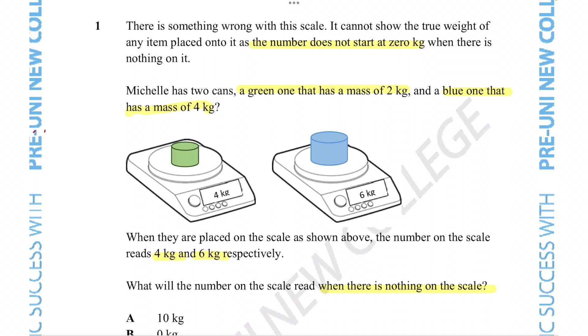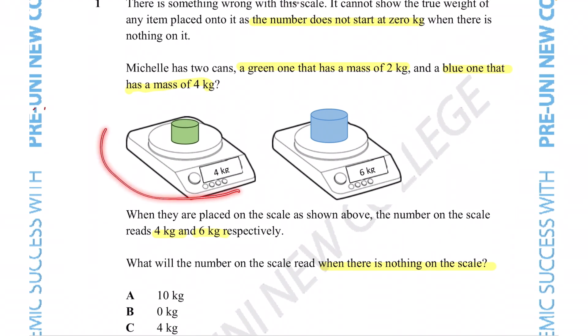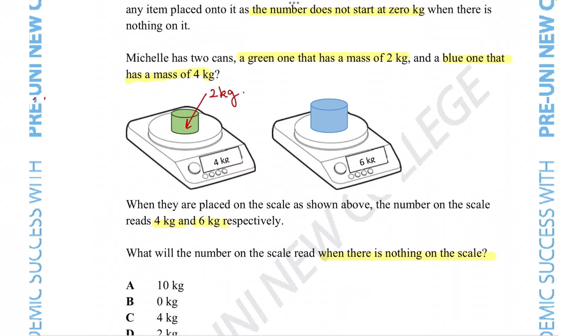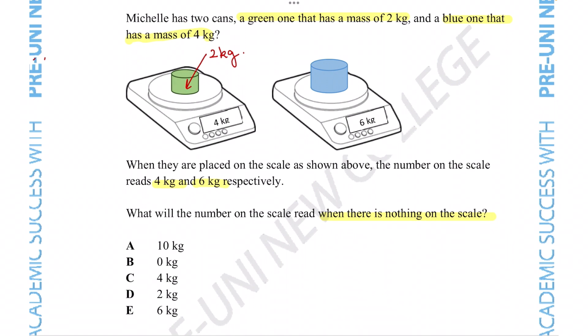We use that information to figure out what is going on with this scale. So for the scenario with this first scale, we've got a mass that we know to have a true weight of two kilograms, and yet the scale is saying that this thing weighs four kilograms.